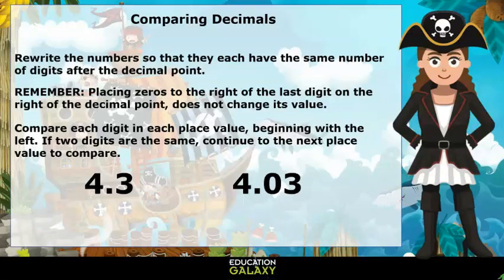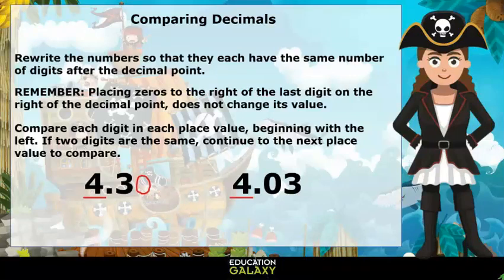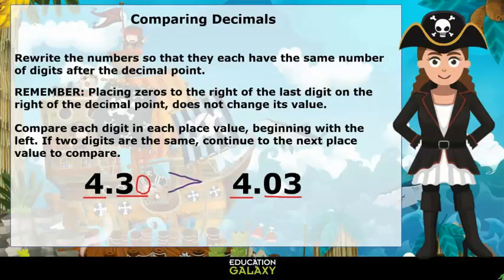Let's check these numbers out. Since the second number has two place values after the decimal, let's insert a zero to make the first number have two place values after the decimal as well. Now, let's look at the biggest place value, the ones place. They both have a four, which is the same, so let's move to the decimal. The first number has 30 hundredths and the second has 3 hundredths. 30 is bigger than 3, so that means 4 and 3 tenths is greater than 4 and 3 hundredths.